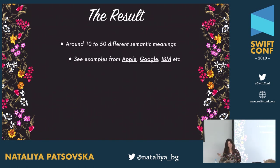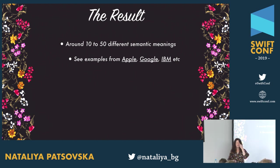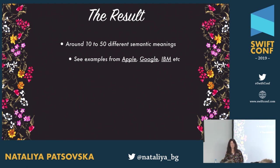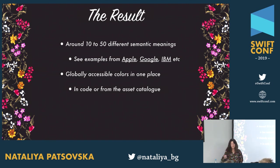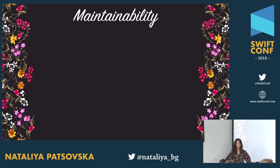In the results, you'll have around 10 to 15 different semantic meanings. If you wonder what those should be, look at open-source design systems — IBM has one called Carbon with around 45 colors used across web and their different apps. You end up with globally accessible colors in one place, whether you keep them in code or in the asset catalog.